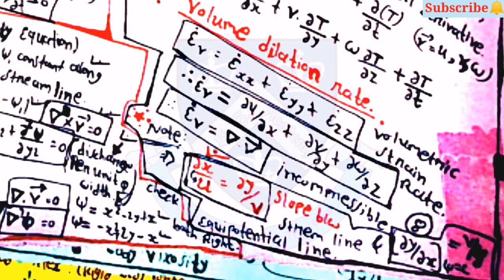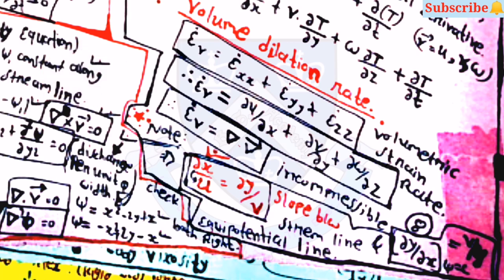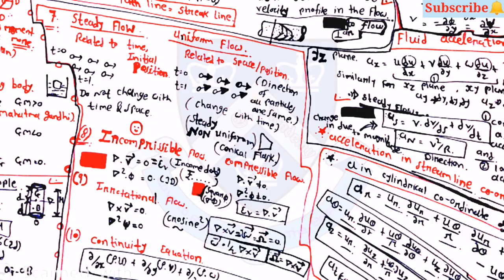The volume dilation rate epsilon-v equals del-dot-v-bar. The equation for the slope between streamlines is del-x by u equals del-y by v, and for equipotential lines a similar relation holds. These are the main equations discussed briefly, and from these equations the questions are mostly asked in the GATE examination.